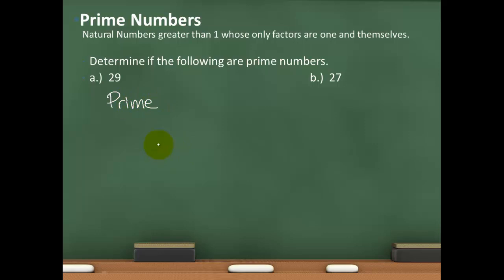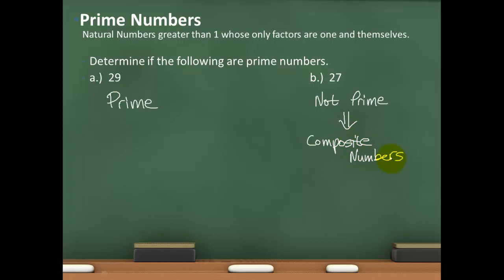Going to 27, I'm going to try to see if I can find at least one number that goes evenly into 27. I can already think of at least two: 3 and 9. Since 3 and 9 are not the same as 1 and 27, that means 27 is not prime. Anytime a number is not prime, we call it a composite number. Composite numbers are numbers that are not prime.